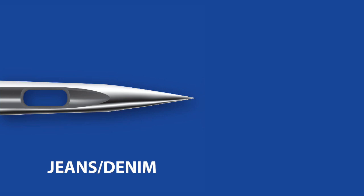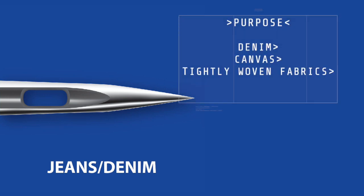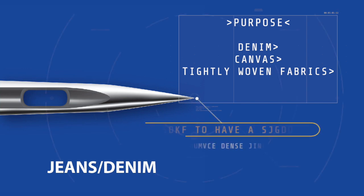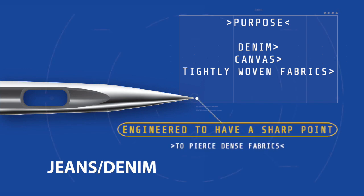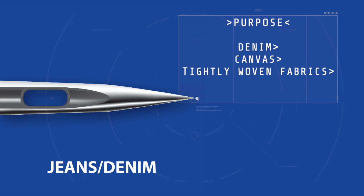The jeans needle is ideally suited for denim fabrics, heavy twill, work wear, or densely woven fabrics such as canvas or heavy linens. This needle is engineered to have a very sharp point and a stiffer shank to resist needle deflection, allowing penetration of really dense fabric.